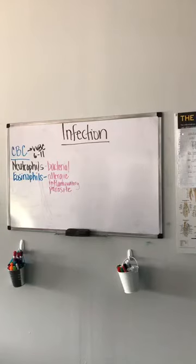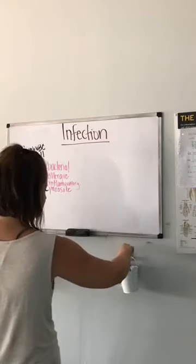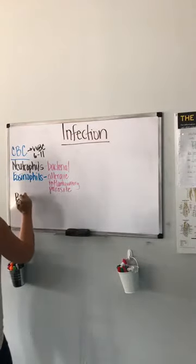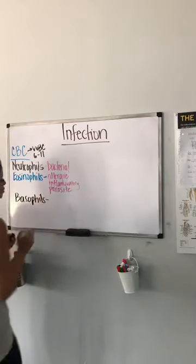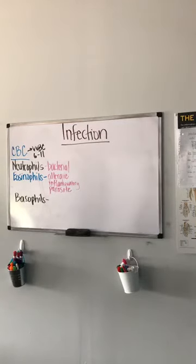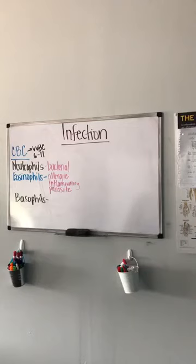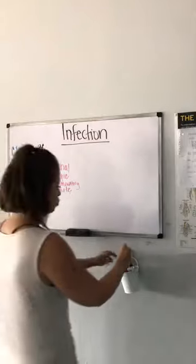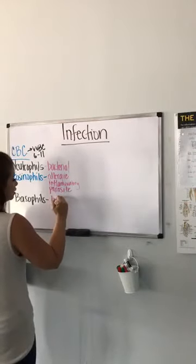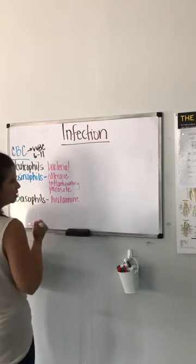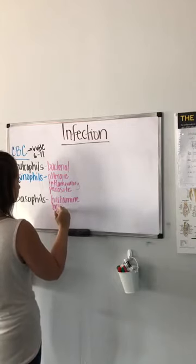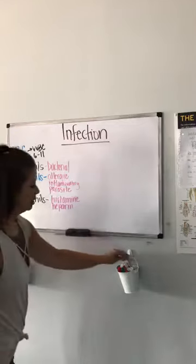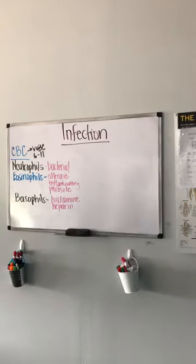The next white blood cell in the differential is basophils. Basophils are more complicated — there aren't very many of them because the body doesn't deal with this response very often. They produce two key things: heparin, which is a blood thinner that helps with clotting — a natural form in your body, not the synthetic form we give patients — and they also produce a histamine response.